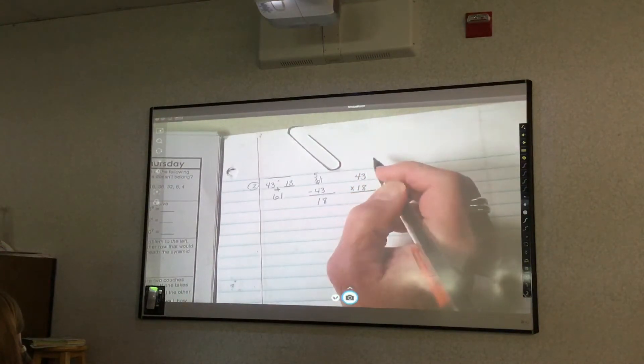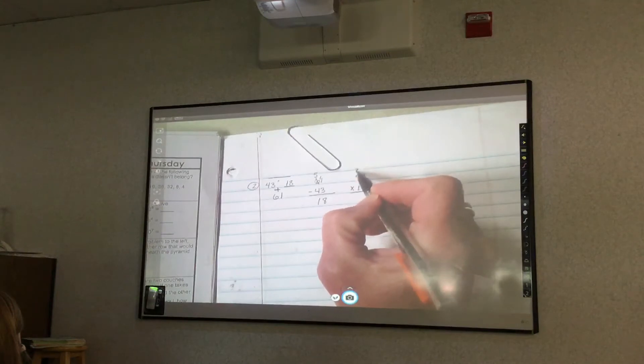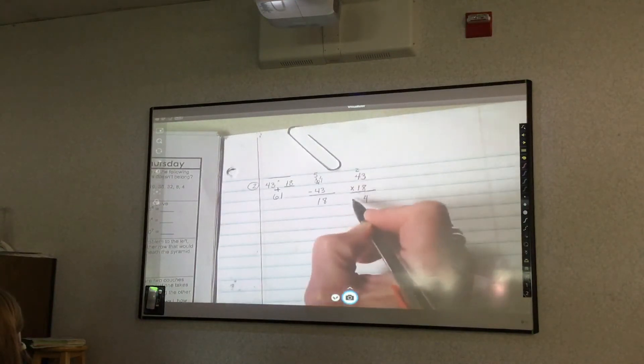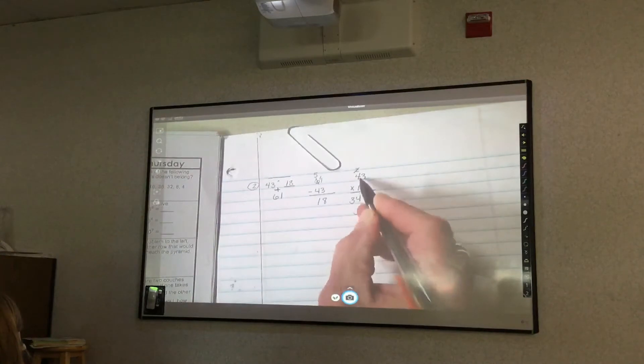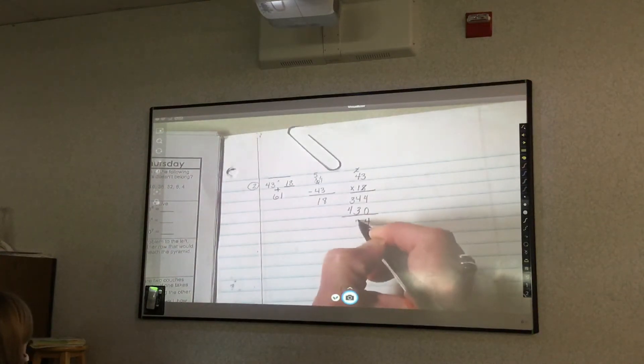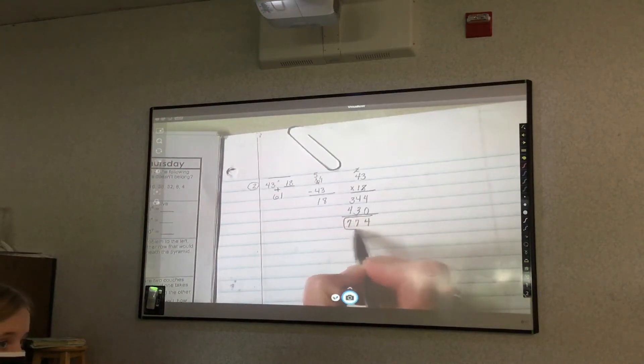8 times 3? 24. 8 times 4? 32. 32 plus 2? 34. Cross off what you've used. Add a 0. 1 times 3? 3. 1 times 4? 4. Add them up. 4, 7, 7, 4. 774 is your final answer.